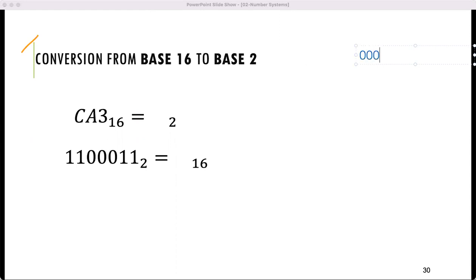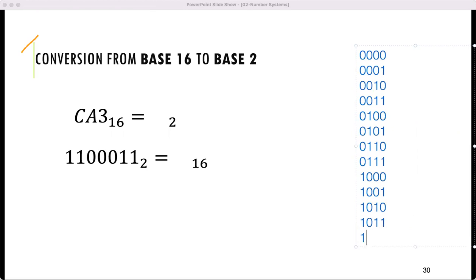So I will start with 0000, 0001, 0010, 0011, 0100, 0101, 0110, 0111, 1000, 1001, 1010, 1011, 1100, 1101, 1110, and 1111. Let's just put it here.